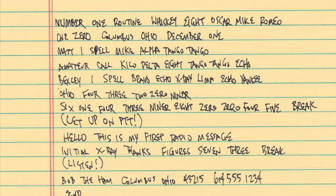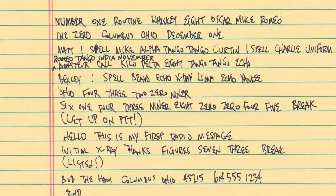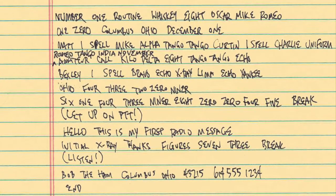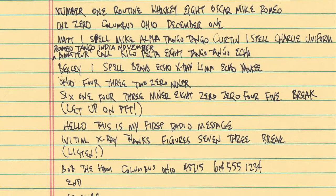Now that we have our crib sheet with everything spelled out, when it comes time to make the transmission, all we need to do is read what we've written out, follow our own notes, and we are able to finish the whole process. By doing all of this ahead of time, we have the opportunity to review our work and make corrections as necessary. For example, when I was creating my crib sheet, I forgot to put the last name of my addressee. So after "Matt — I spell — Mike Alpha Tango Tango," I would need to insert "Curtain — I spell — Charlie Uniform Romeo Tango India November." Now the crib sheet is correct and on air we're going to sound like an old pro.